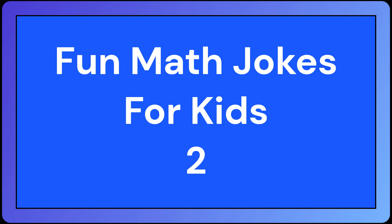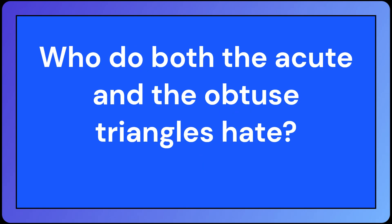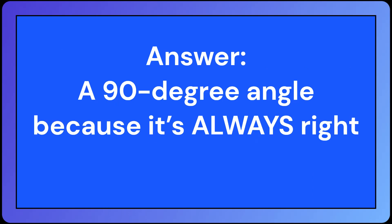Fun Math Jokes for Kids. Who do both the acute and the obtuse triangles hate? A 90-degree angle because it's always right.